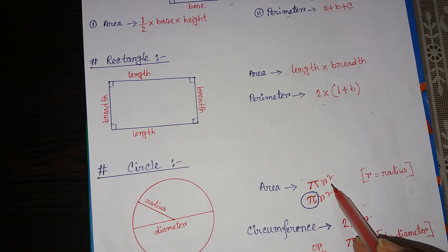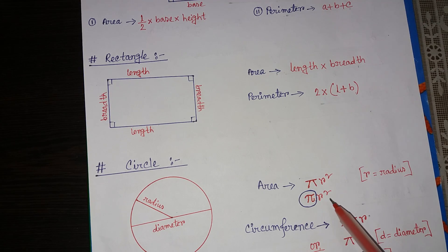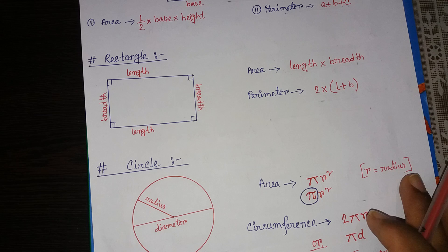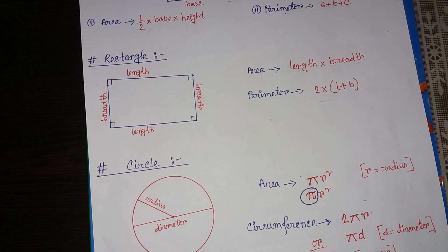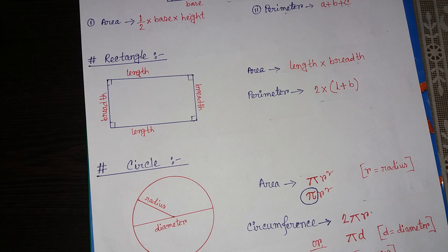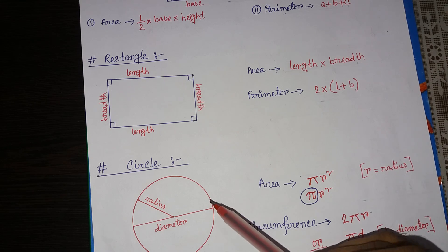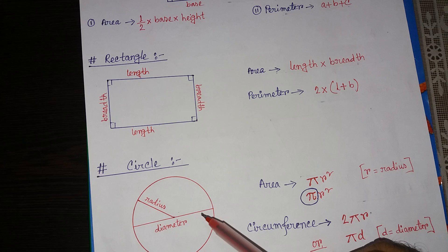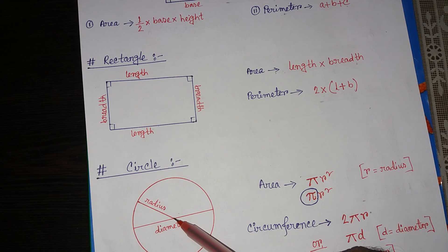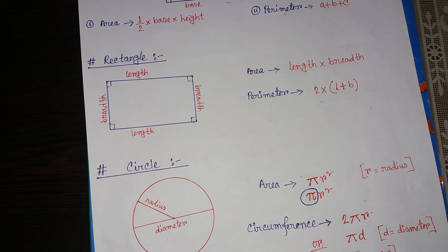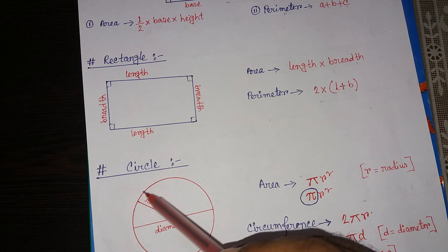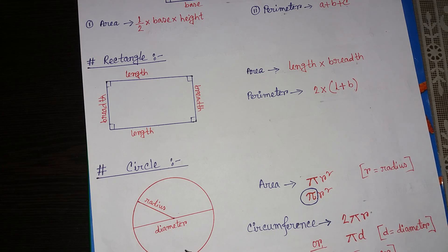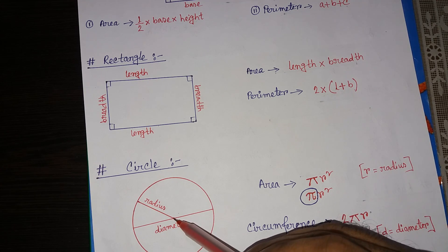The next topic is the circle. The area of a circle is very popular — we all know it. Area equals pi R squared. R means the radius. The radius is the distance from the center of a circle to the circumference.